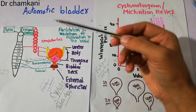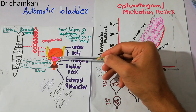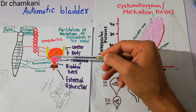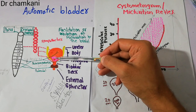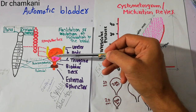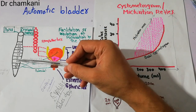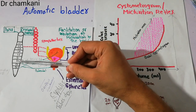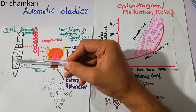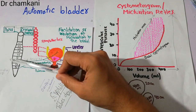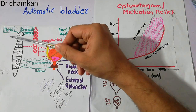If urine starts entering the urinary bladder, there are stretch receptors throughout the urinary bladder, but specifically they are present at the posterior urethra. When urine comes and touches that segment, the sensory stretch receptors get activated, they get stretched, and they send signals to the spinal cord — specifically to the sacral segment of the spinal cord.